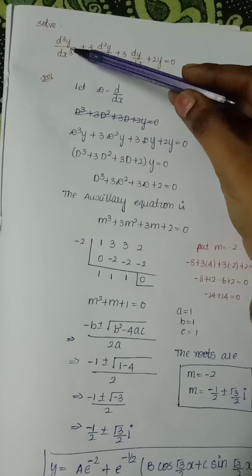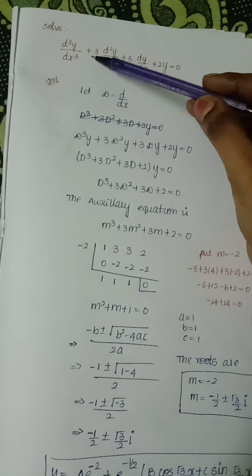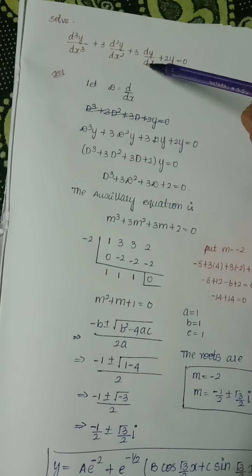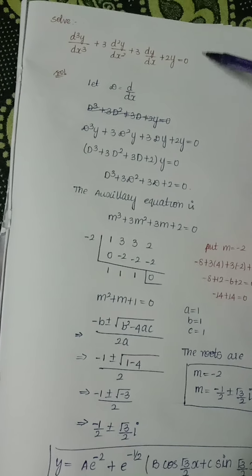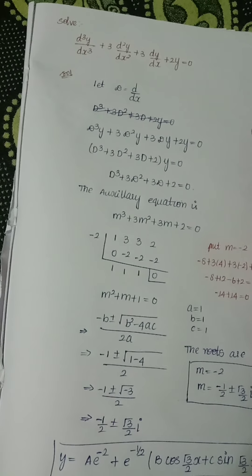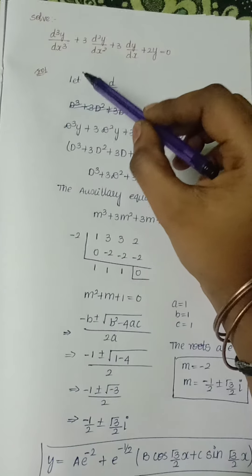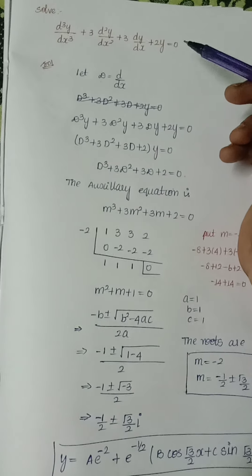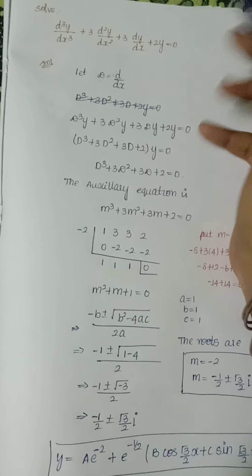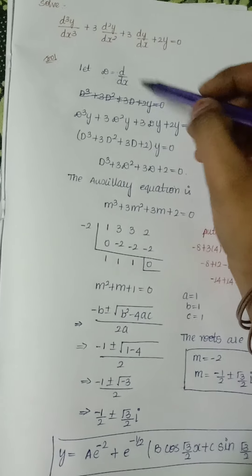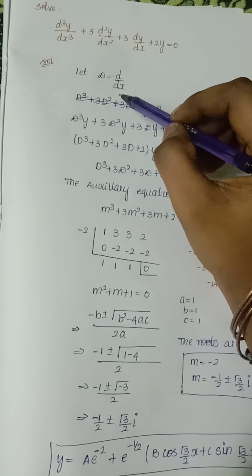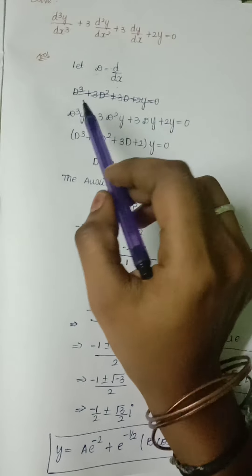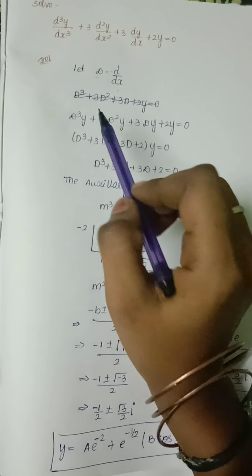Today's question is d³y/dx³ + 3d²y/dx² + 3dy/dx + 2y = 0. This is a linear equation. To solve it, we assume D = d/dx, as explained in the previous video, for simplification. Substituting D into the equation gives us D³y + 3D²y + 3Dy + 2y = 0.